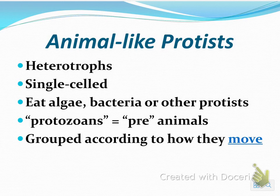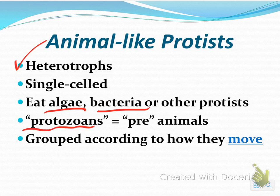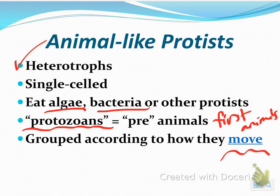Animal-like protists are heterotrophs and they are single-celled — all of your animal-like protists are single-celled. They eat algae, which is a plant-like protist, bacteria, which is a prokaryote, or other animal-like protists. They're also known as protozoans, or pre-animals, or the first animals. They are grouped according to how they move through their environment.